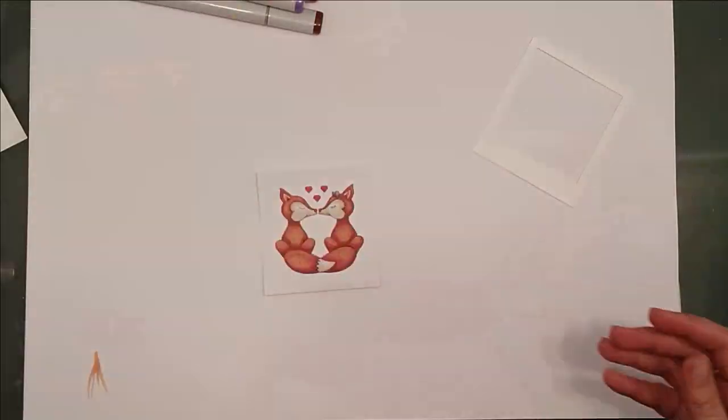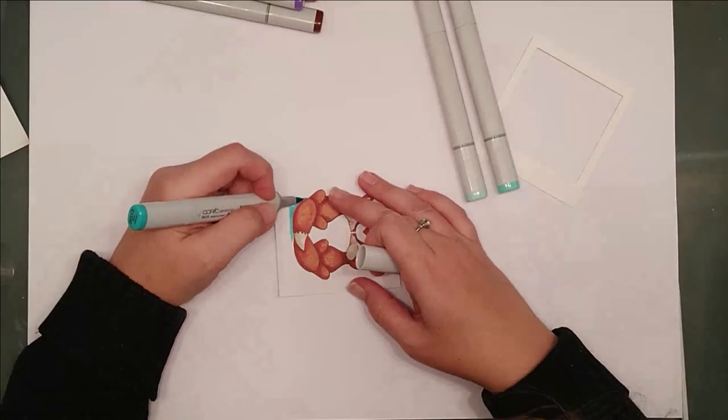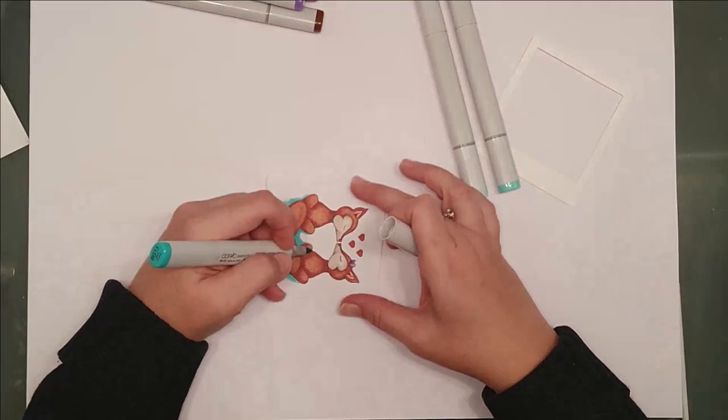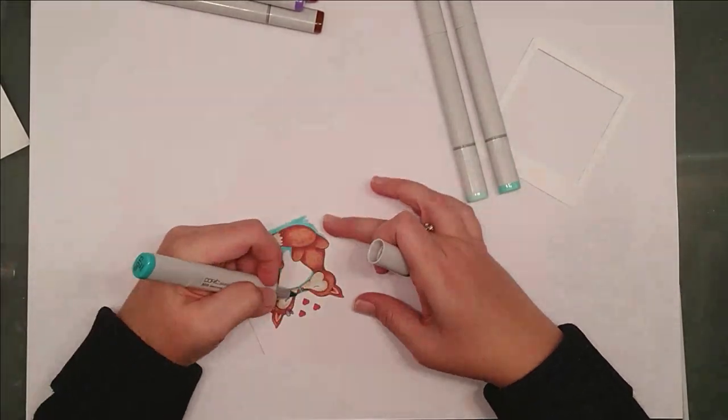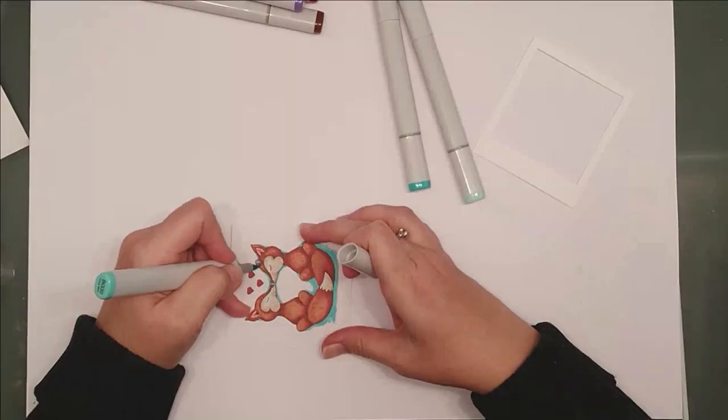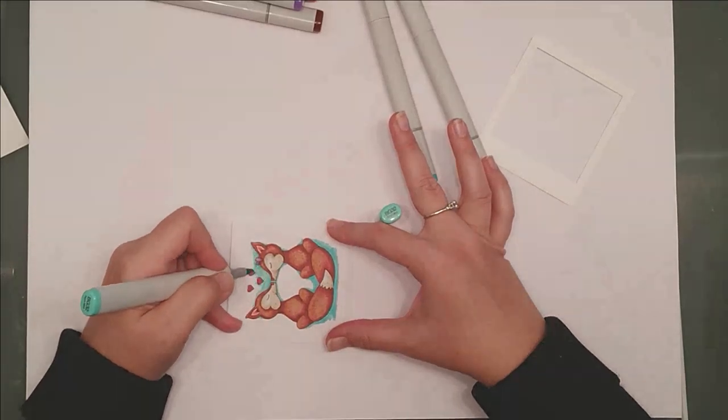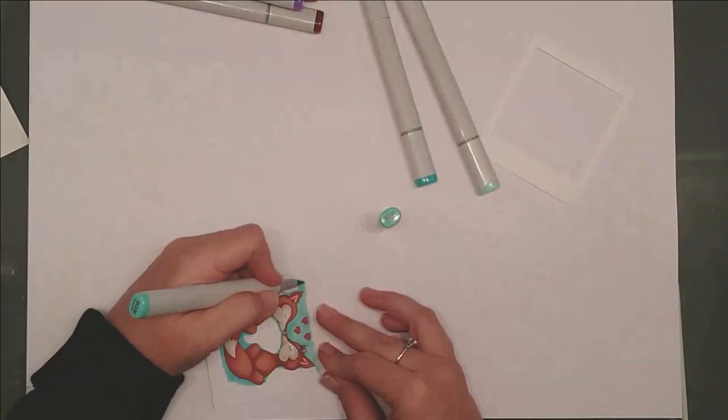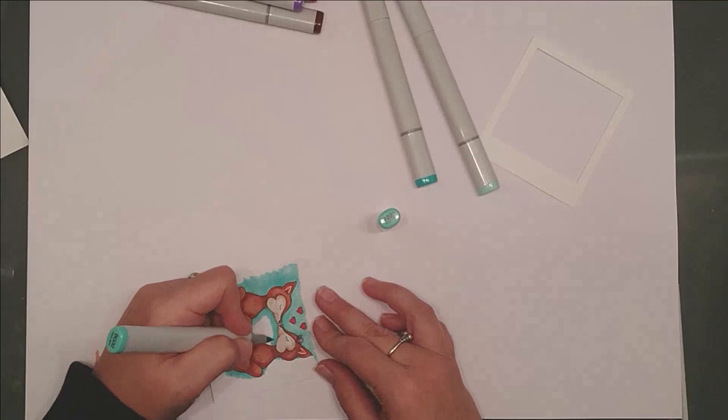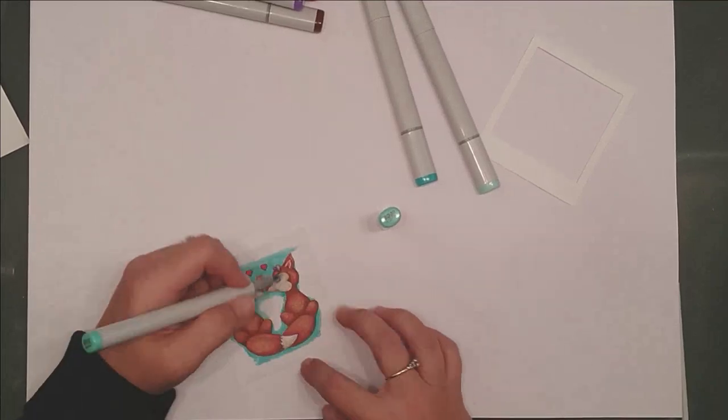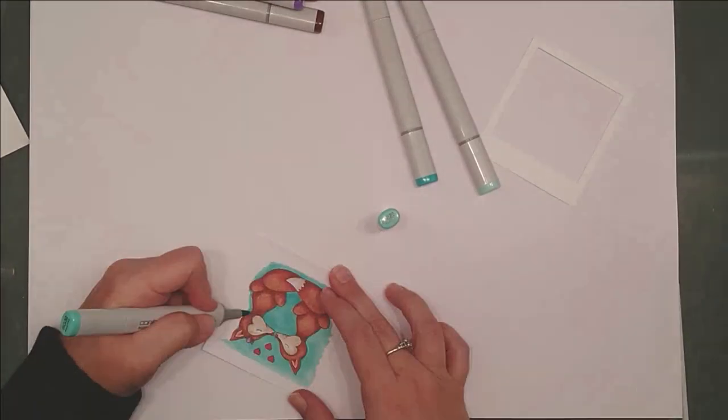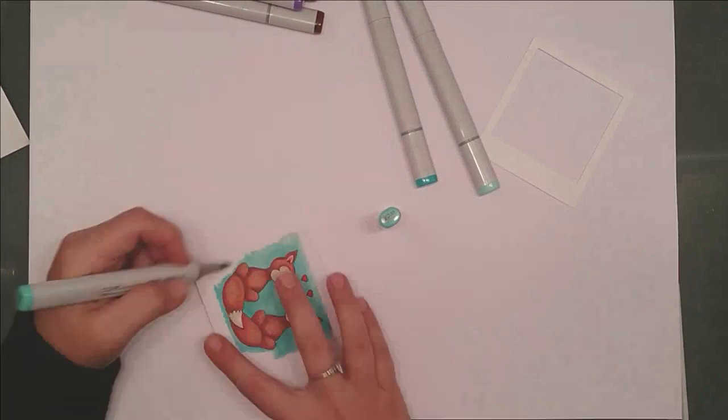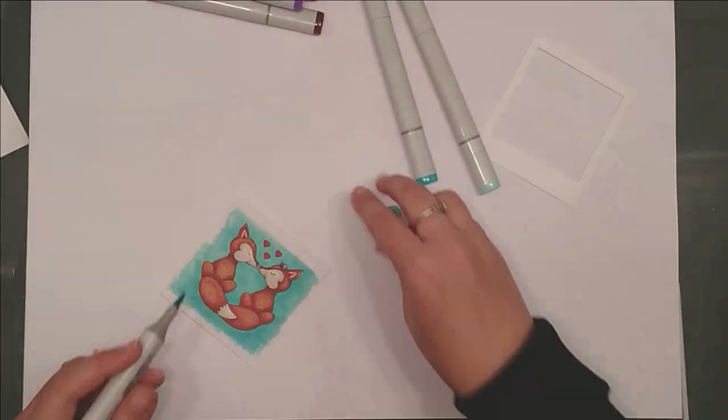For my background, I chose some soft aqua colors. I used the darkest color around the edges of the foxes to give them a little bit of depth, and then the mid and the lighter tones as I get further away from them. I tried to go over everything twice and keep my strokes going in the same direction as much as possible. That helps give you even coverage and a lot of saturation.